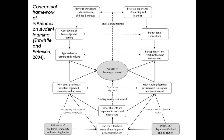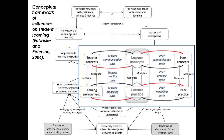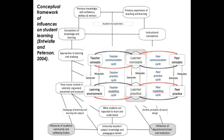Another kind of framework is the Entwistle and Peterson framework, which talks about influences on student learning. This covers a wide variety of influences on the quality of learning achieved: approaches to learning and studying, perceptions of the teaching and learning environment, university teachers' subject knowledge and pedagogical beliefs, and influences of the academic community and validating bodies. This takes it wider and wider to describe teaching and learning as a whole system. We need that kind of framework too, because making teaching and learning work better means understanding all of those aspects and how technology can improve them.